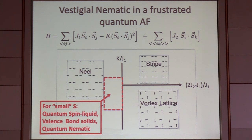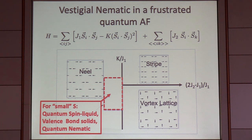There have been a lot of numerical studies in this regime, tending to work with small S — S equals one-half or S equals one. In that regime, people have found evidence for quantum spin liquids, valence bond solids, and quantum nematics. This piece of the problem is really not solved yet, so I'm not going to tell you the answers — I'm going to try to be disciplined and tell you things I know are true.